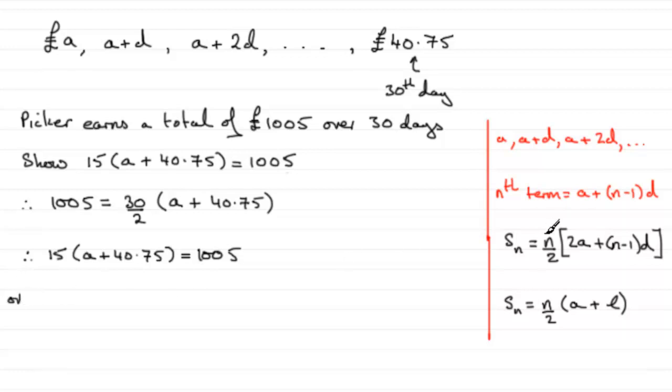I could use this version, and I could say that 1005 equals n over 2, so that's going to be 30 over 2,